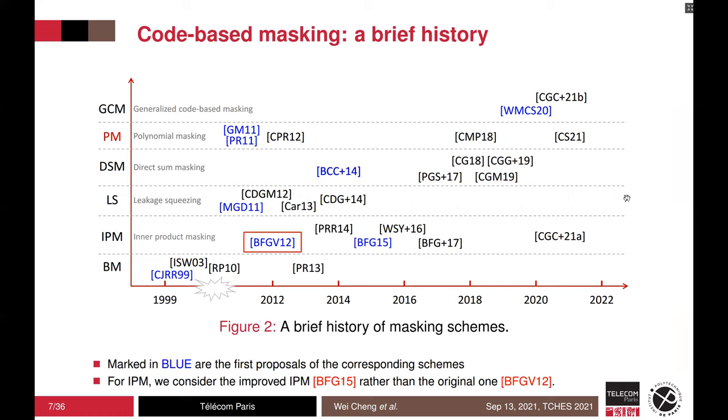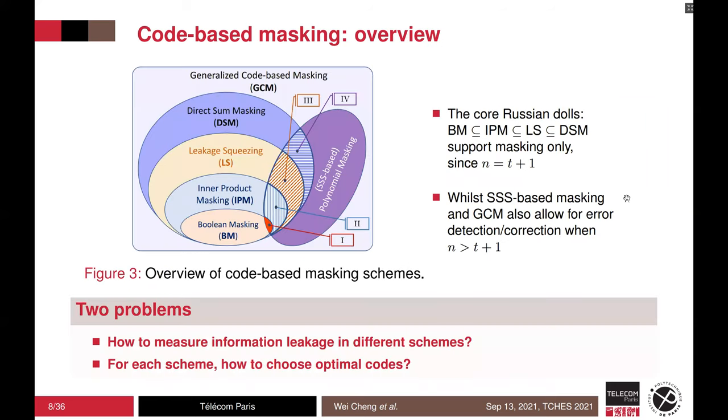Next, we present a brief history of code-based masking. Note that these references marked in blue are the first proposals. The leakage squeezing and the polynomial masking were proposed in 2011 and the original IPM was 2012. At last, the most general case was proposed in CHES 2020. In this paper, we will focus on this general case and show how to quantify the information leakage.